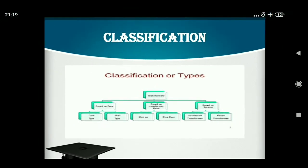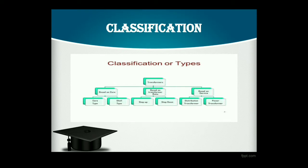Apart from that, transformer can be classified into other two categories. One is instrument transformer — that is current transformer and potential transformer — which are mainly used for measuring purpose: to measure high voltage and high current respectively. Potential transformer is used to measure high voltage and current transformer is used to measure high current. And according to the phase supply, transformer can be classified into two categories: one is single phase transformer, another is three phase transformer.